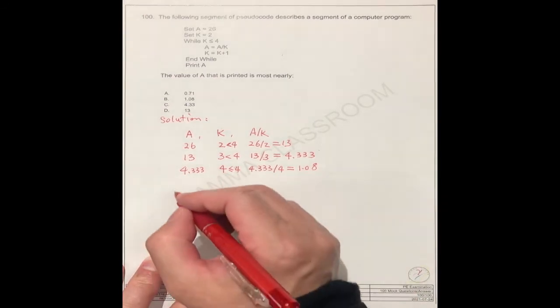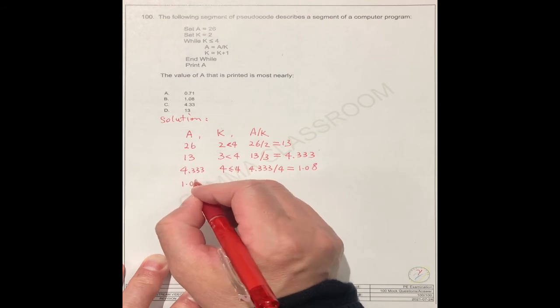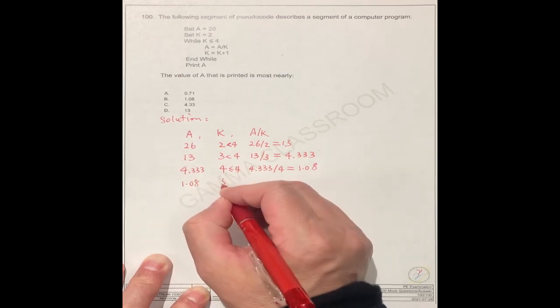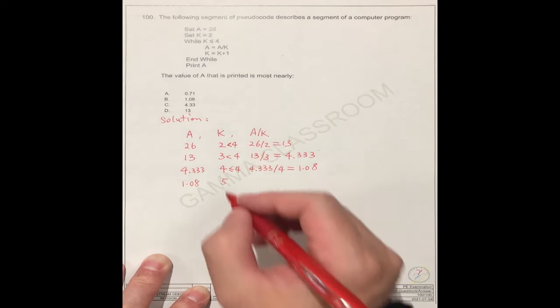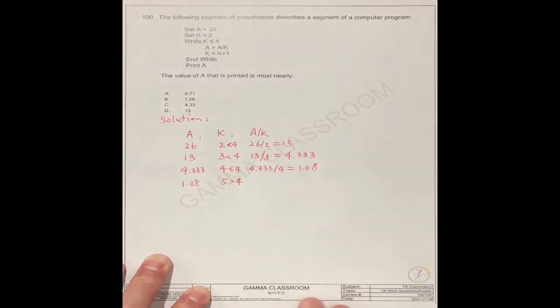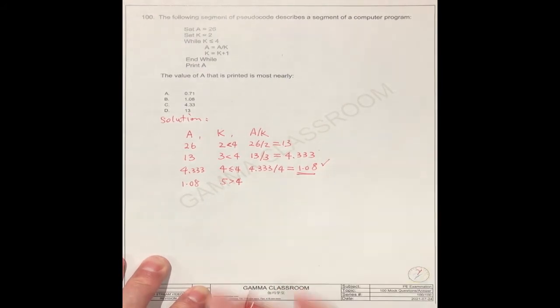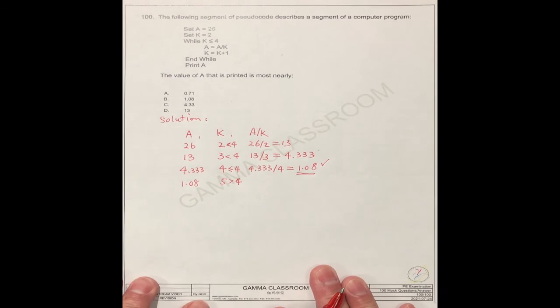Because this here is 1.08, and this is 5, k is 5, is greater than 4. So this number is the final number, the final number.